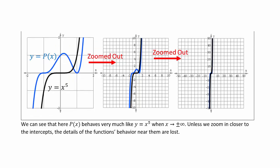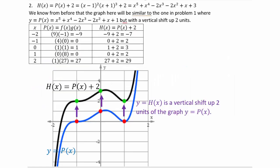Graphically, zooming in close to the zeros shows the full polynomial looks different from x^5. But zooming out far enough, they look identical — that's another way to confirm the end behavior is like x^5. Now if we add a 2 to the polynomial, the graph simply shifts 2 units up. The overall shape is preserved, but the x-intercepts will be in different locations.